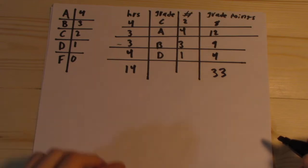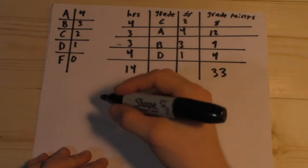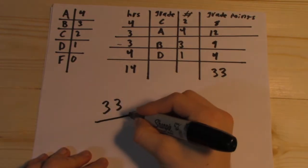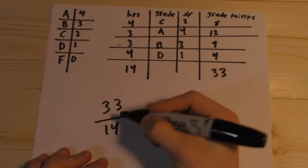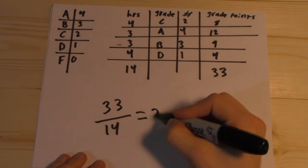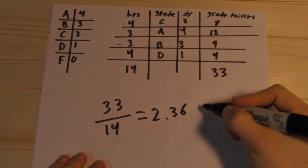Our total number of hours is going to be 14 hours. Now you're going to divide your total grade points by your total credit hours, and that will give us our GPA. Our total grade points is 33 divided by 14 credit hours, which equals 2.36 for our GPA.